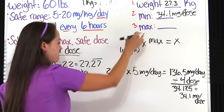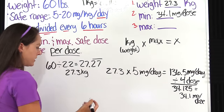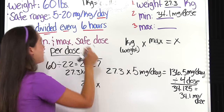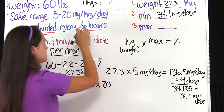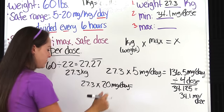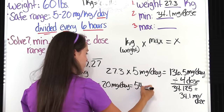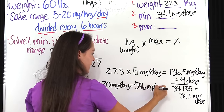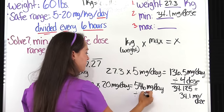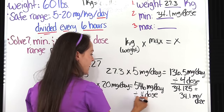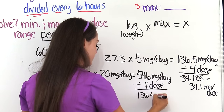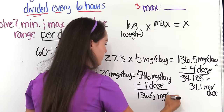Now let's solve for the maximum dose. We use the same formula: 27.3 kilograms multiplied by 20 milligrams per day — the maximum side. When we multiply that out, we get 546 milligrams per day. The problem wants it per dose, so we divide by 4 — because they need it every six hours — and we get 136.5 milligrams per dose. That is our maximum amount per dose.